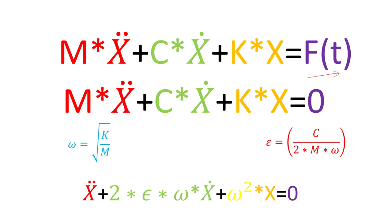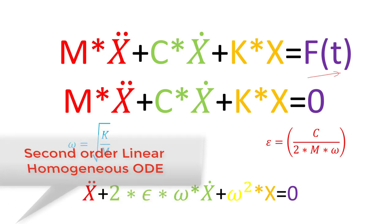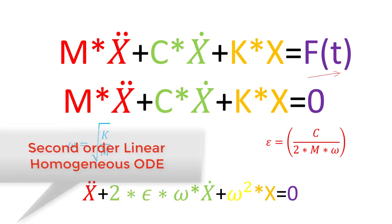Looking closely at this equation — is it homogeneous or non-homogeneous? The equation is homogeneous in nature. It is also called a second-order linear homogeneous equation. It is linear at this stage because the mass, damping coefficient, and stiffness are constant values. If they were dependent on each other, the equation would become non-linear.